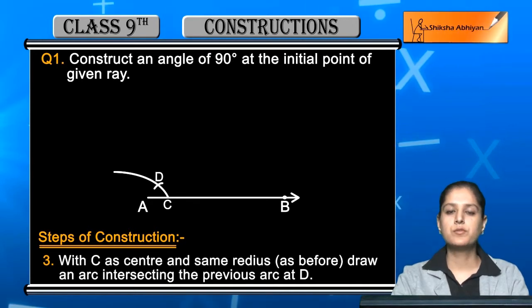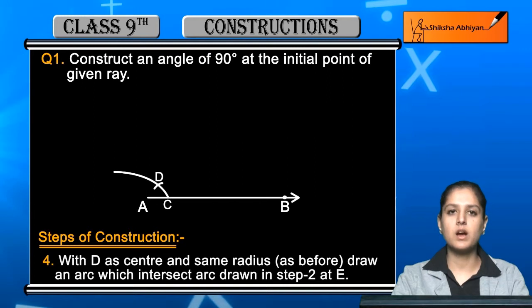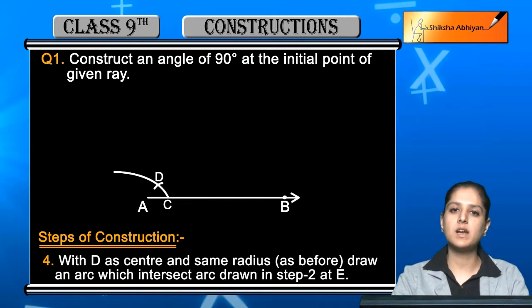Now the fourth step: with D as center and same radius, draw an arc which intersects the arc drawn in step 2 at E. Now you will use D as center and then you will take the same radius. You will take the same radius that you have been using, you will not change it.